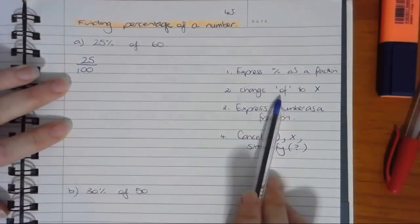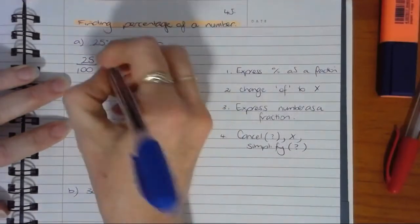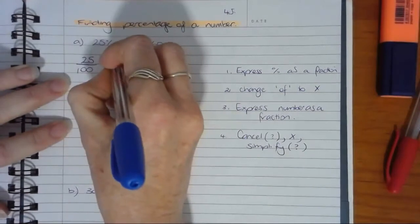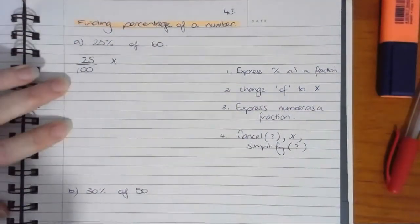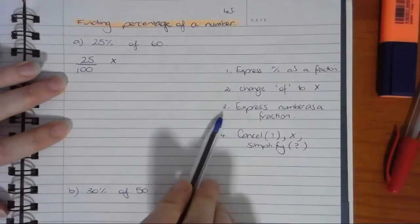Second step: change the 'of' to a multiplication sign. Now of course if you have a word question, like a complex question, there might not be the word 'of' there. You've got to recognize what the question is asking you, but that's what you're going to do for this one.